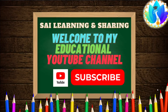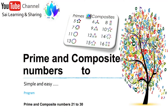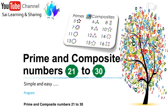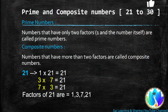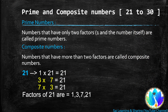Hello everyone, welcome to my YouTube channel. Today we are going to learn about prime and composite numbers from 21 to 30. It's very simple and easy. Let's move on. If a number has only two factors, that number is called a prime number. If a number has more than two factors, that number is called a composite number.